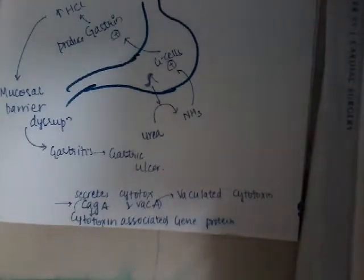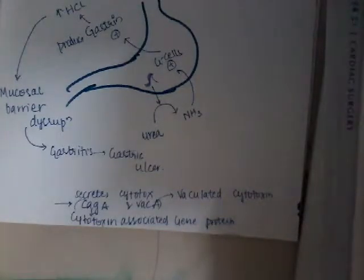If H. pylori infects the duodenum, it may cause gastric metaplasia. It is more common in the lower socioeconomic group. What test do you do to identify H. pylori infection? The most important test for identifying H. pylori infection is the rapid urease test.